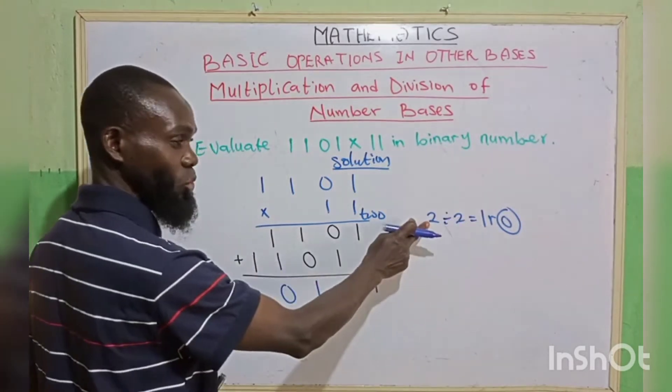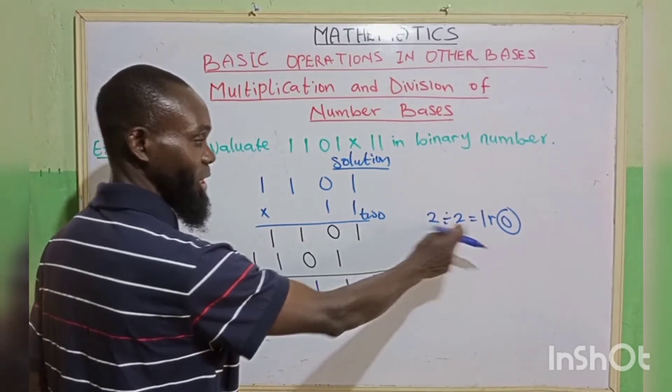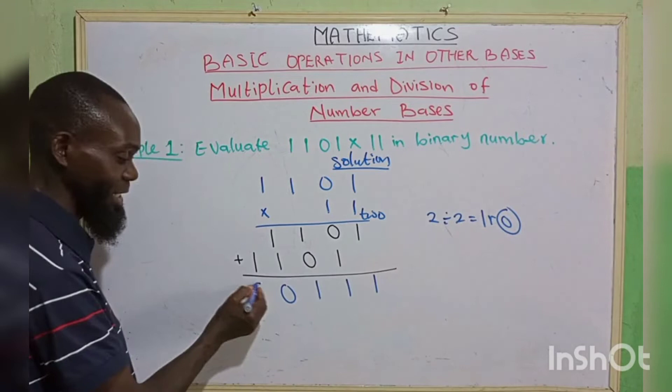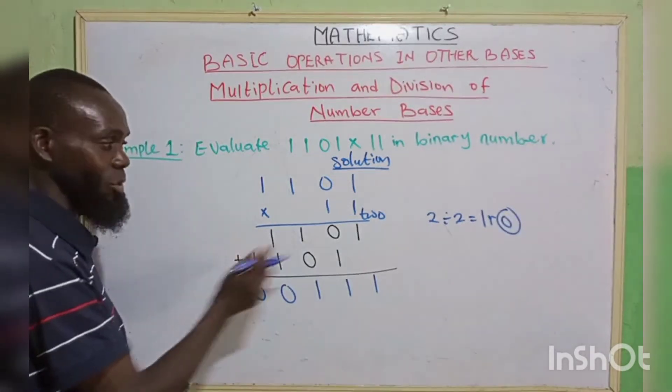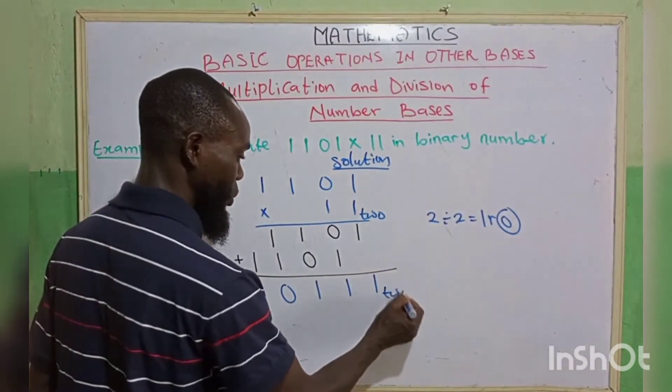1 plus 1 we've carried, that's 2. 2 divided by the base 2 gives 1 remainder 0. We write our remainder 0. There is no number again, you write your 1 in base 2.